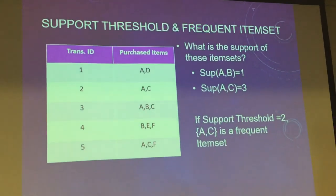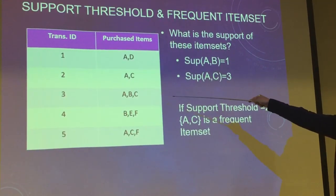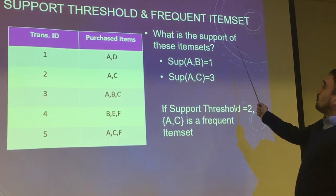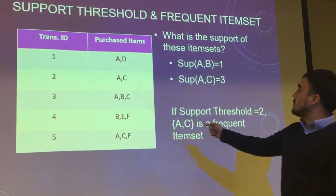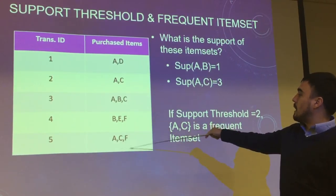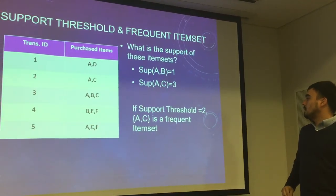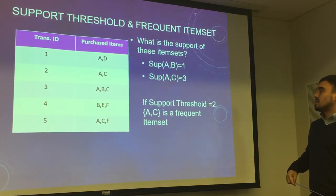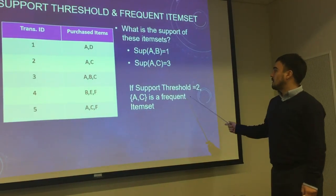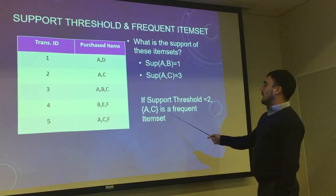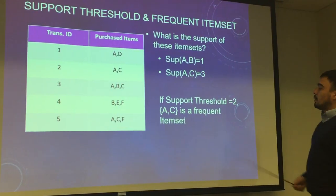This section covers support threshold and frequent item sets. I created five different transactions at a store — these are the different baskets of items purchased together. For example, the support of item set A and B is one, because it only occurred in one transaction — very low support. Whereas A and C occurred here, here, and here, giving it a support of three. A support threshold is a minimum value used to identify what is significant. Something with only one count is not very significant. Given a threshold of two, A and C would be a frequent item set, as it's the only item set that occurred at least twice together.